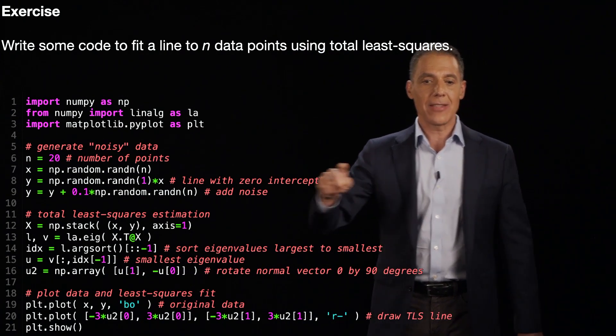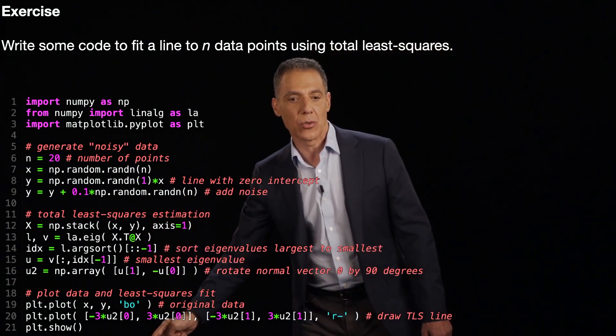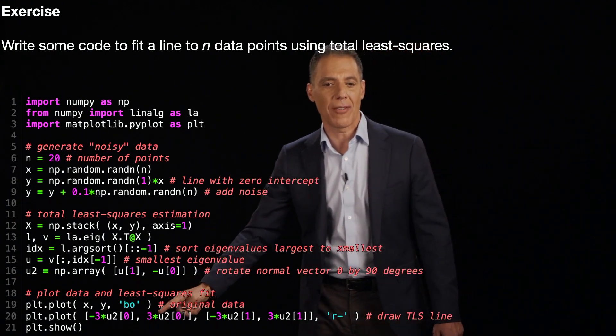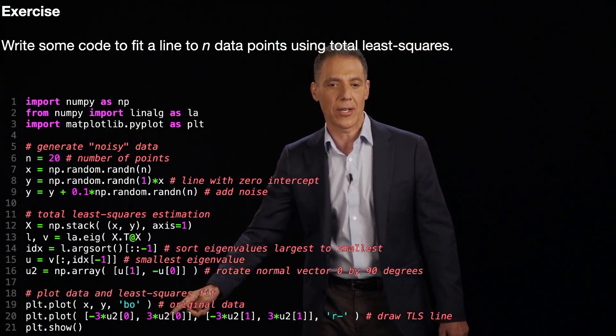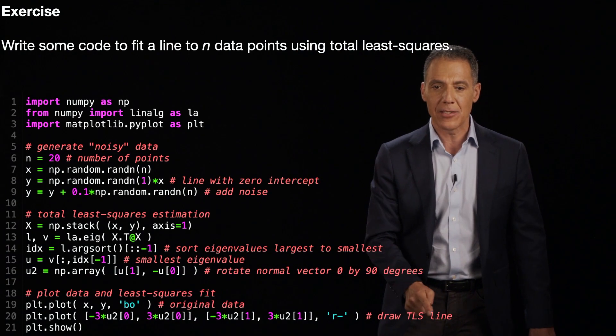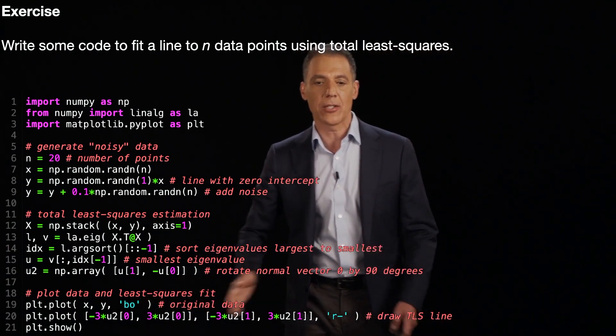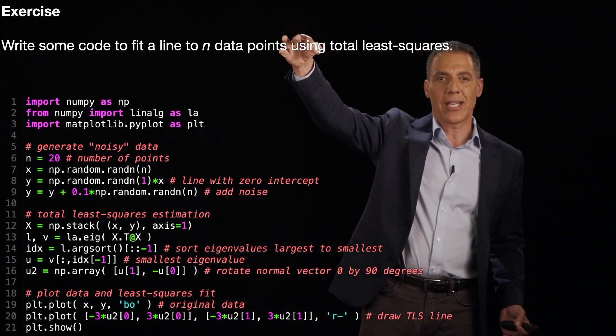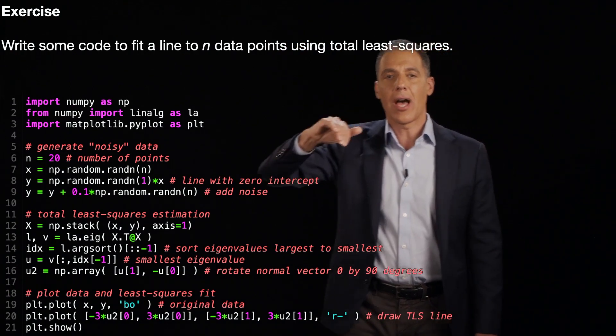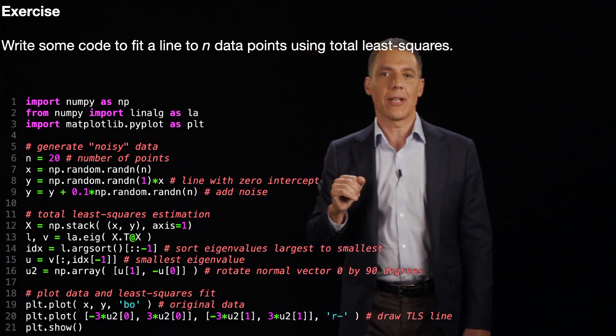And then when I feed that U2 into – sorry, I told you it was U. It was U2. You probably saw that in the code because there's a U2 right there. So when I feed that into this little bit right here, it will extend the line out by scaling it. And you should see that the line goes through the data very nicely.